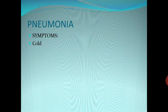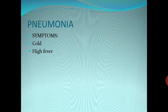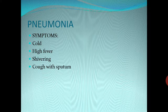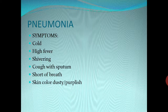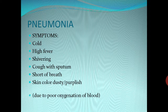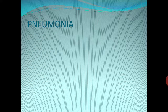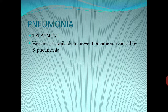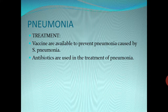Symptoms of pneumonia include cold, cough, high fever, shivering, cough with sputum, and shortness of breath. The skin color may become dusty or purplish due to poor oxygenation of the blood. Treatment: vaccines are available to prevent pneumonia caused by Streptococcus pneumoniae, and antibiotics are used in the treatment of pneumonia.